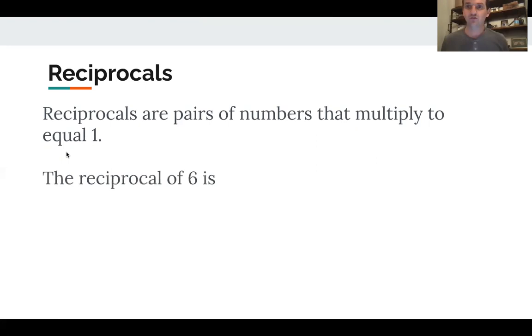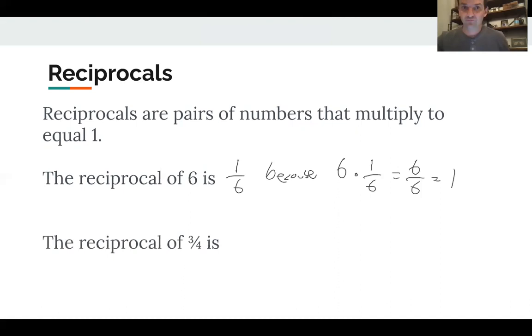So the reciprocal of six, for example, is one-sixth. And the reason for that is because if I do six times one-sixth, I get six-sixths, which is one. So six and one-sixth, those are reciprocals.